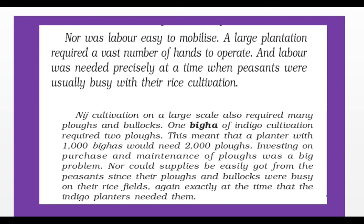Niz cultivation was also not easy because labor was not available in sufficient numbers. Large-scale Niz cultivation required many plows and bullocks — one bigha of Indigo cultivation required two plows, meaning a planter with a thousand bighas would need two thousand plows. Investing in the purchase and maintenance of plows was a major problem, and plows could not easily be obtained from peasants since their plows and bullocks were busy in other fields. In the next class, we will study the Ryot cultivation system.